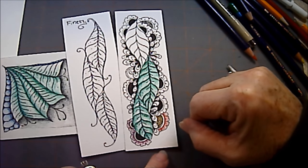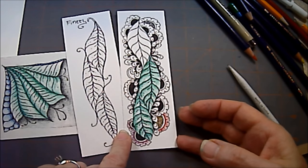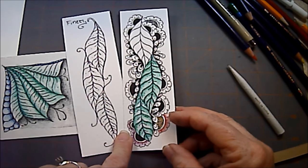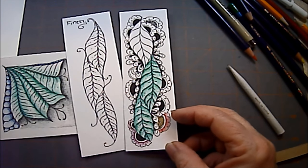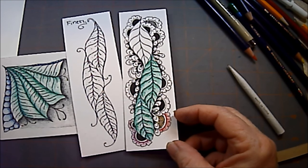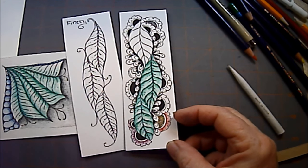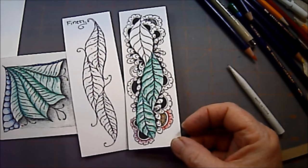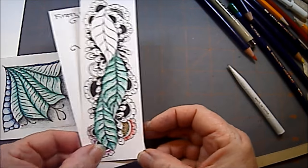We'll just add a little color to this bookmark so you can see how I do it. I'm going to use Inktense pencils and a little odorless paint thinner. So let's get started on Finery.